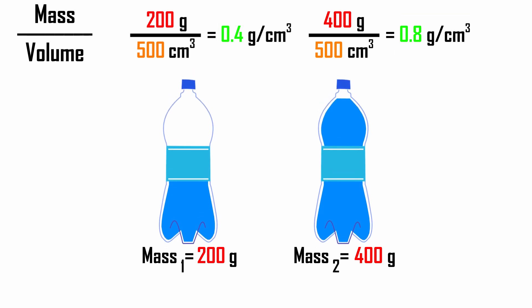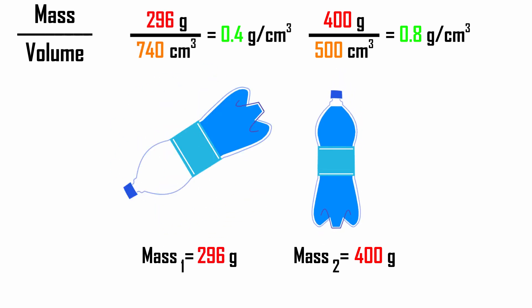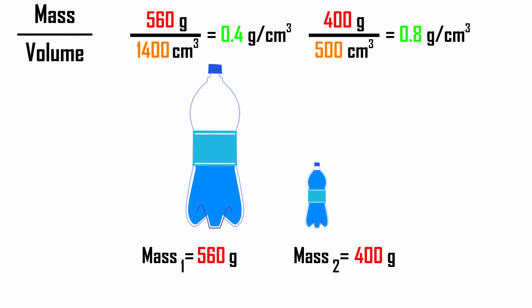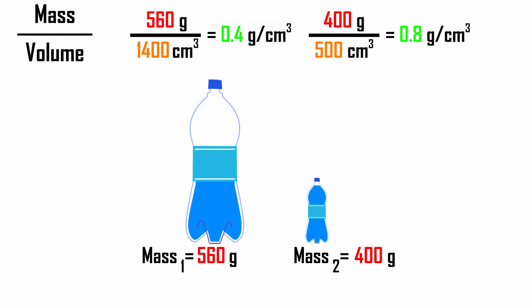Note that this doesn't mean one object is more dense than another just because it weighs more. For example, if we grow the bottle on the left so it's much larger, the bottle on the left is now significantly heavier than the bottle on the right, but it is still less dense. That's because when we grew the bottle, the weight and the volume increased by the same factor, so the weight-to-volume ratio didn't change.